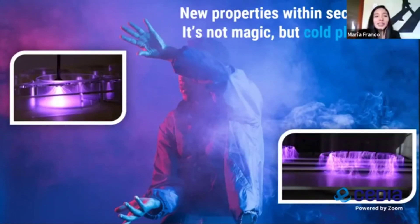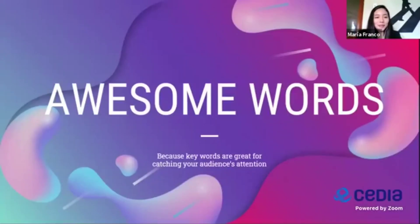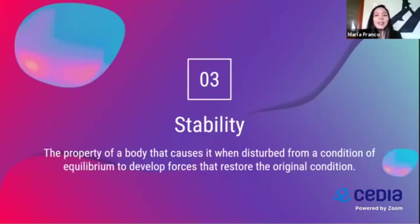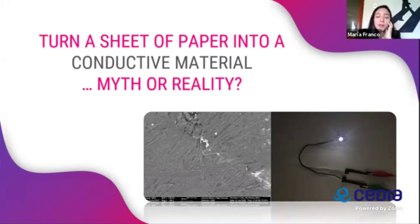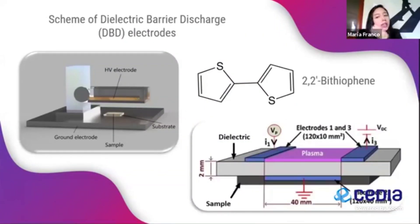New properties within seconds — it's not magic, but cold plasma. Regarding stability, the property of a body that causes it, when disturbed from equilibrium, to develop forces that restore the original conditions: can you turn a sheet of paper into a conductive material? In 2020, some authors immersed an ordinary sheet of paper in a VFFIN solution, carried out a non-gaseous dielectric barrier discharge, DVD polymerization, using a microsecond-pulsed power supply for 10 minutes with air plasma.